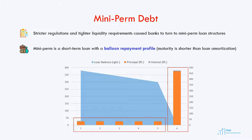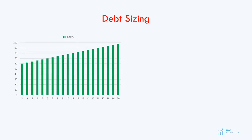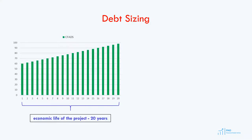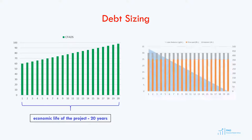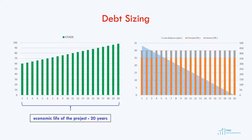Many loans have this balloon repayment profile in project finance. Let's assume that we have a project with an economic life of 20 years. We size the debt for the project based on CFADs that the project will generate over 20 years. This is a usual debt repayment profile based on 20 years of the project's operations.